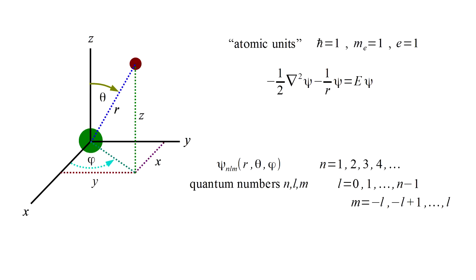Hydrogen orbitals are characterized by three quantum numbers: N specifies energy, L specifies angular momentum, and M specifies the z component of angular momentum.